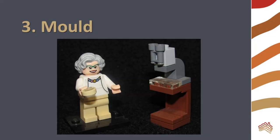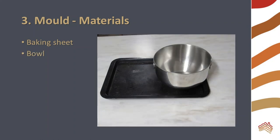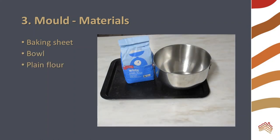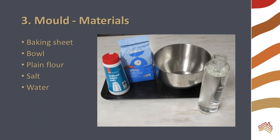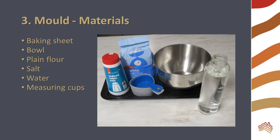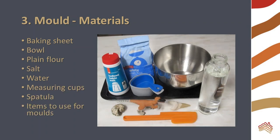Our third model is that of molds. You will need a baking sheet, a bowl, plain flour, salt, water, measuring cups, a spatula, items to use as your fossils, and an oven.